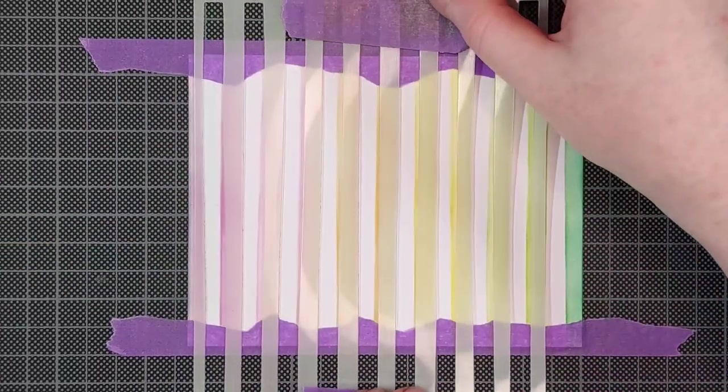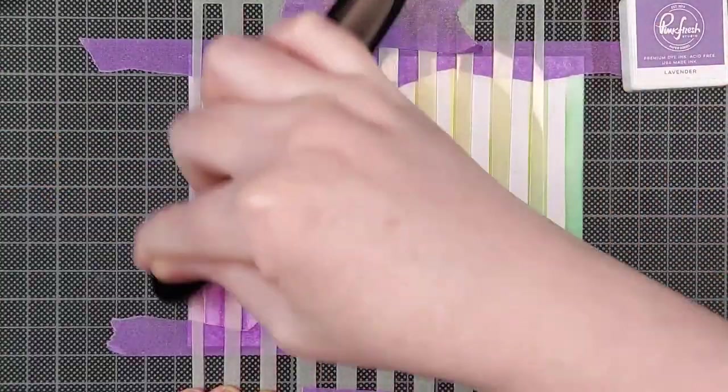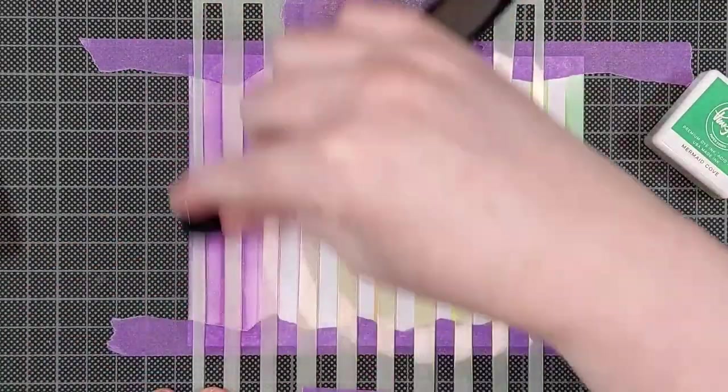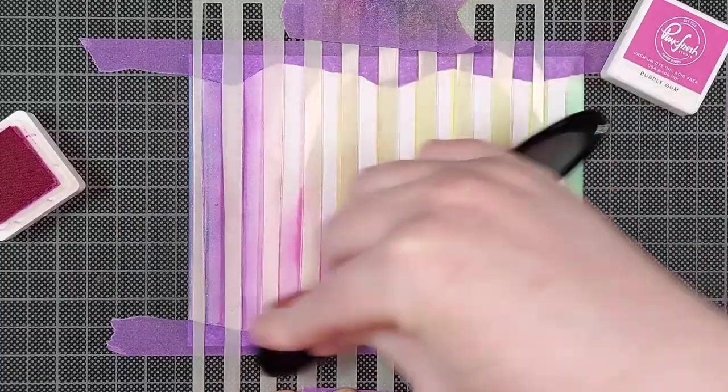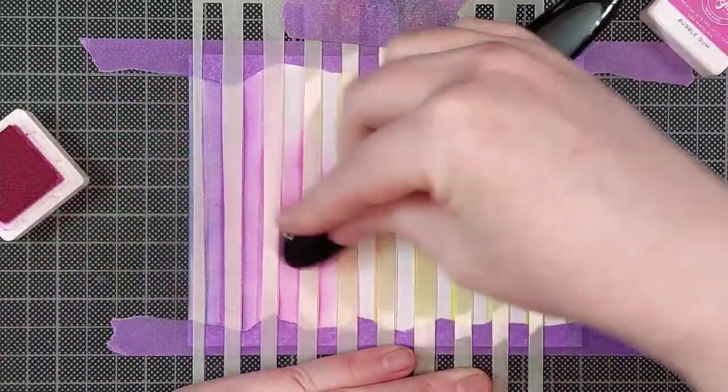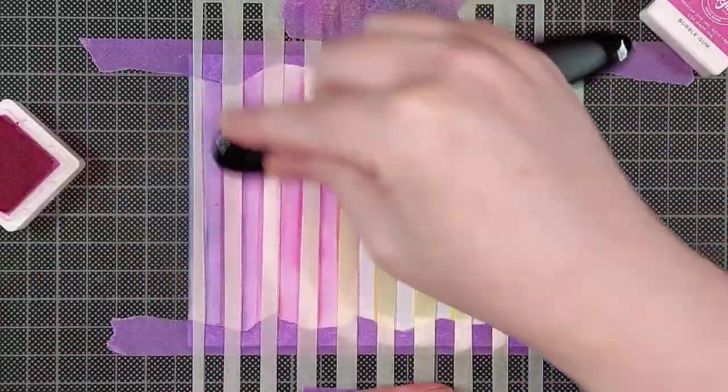I'm moving my stencil so the lines of the stencil align with the lines I've already inked up. And then I'm using darker inks to ink in between the lines. I put the stencil slightly offset so there would be just some slivers of white in between all the colors. This will add some nice highlight to my stenciled piece.